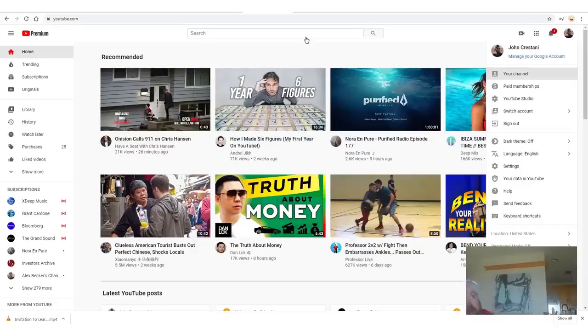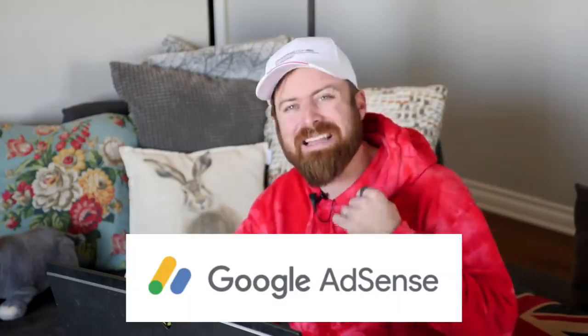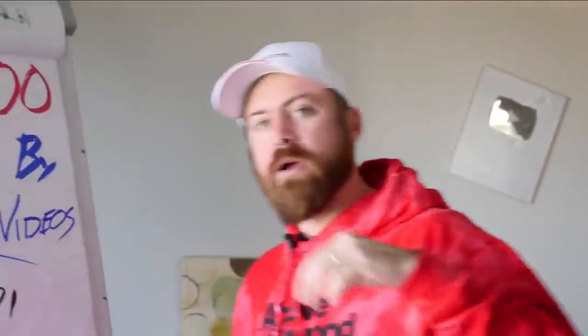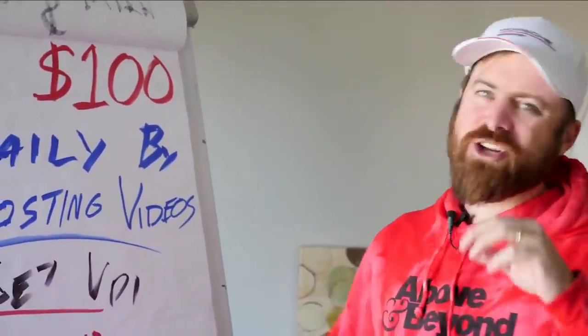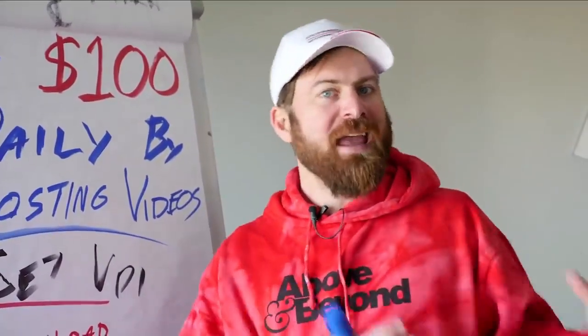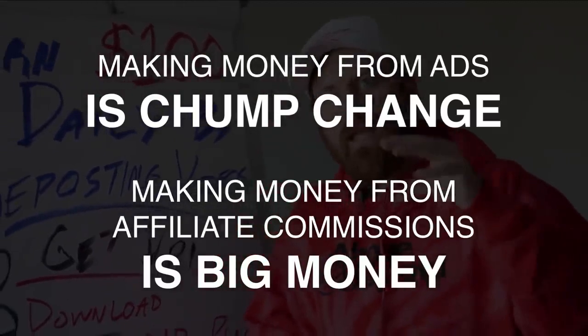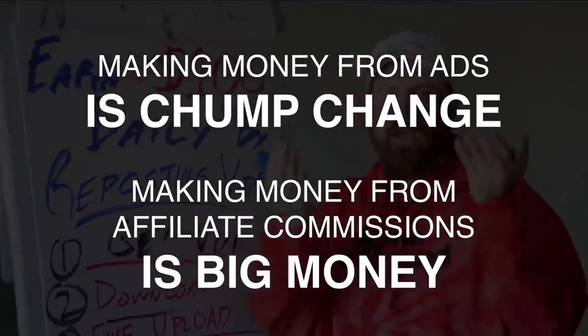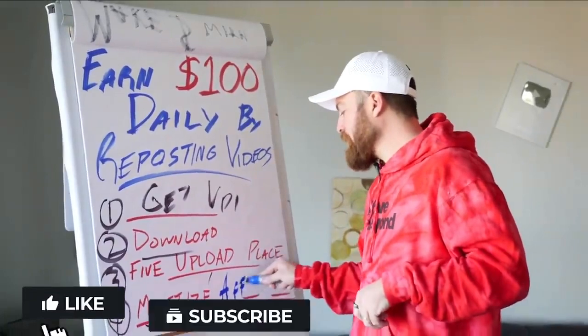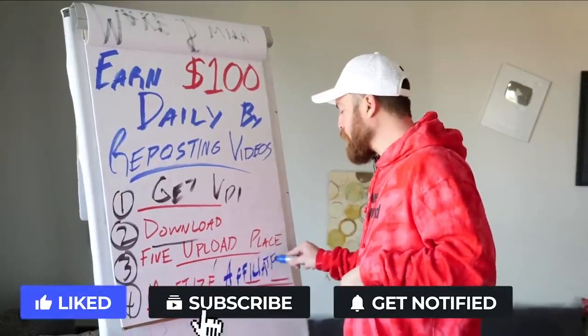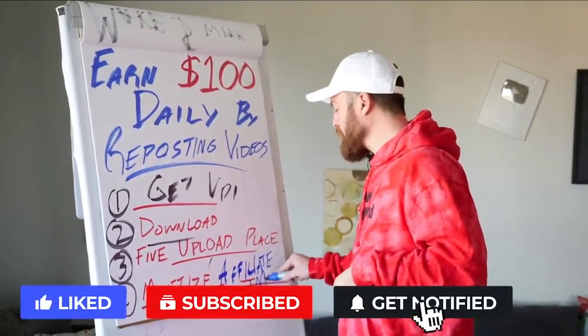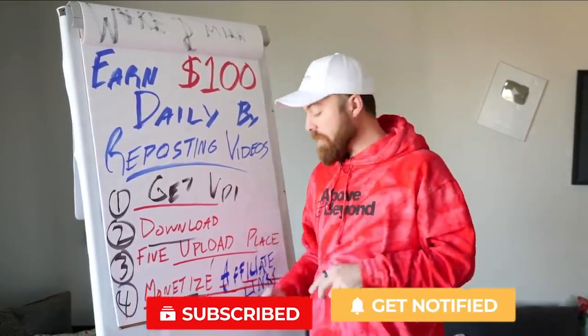Now the thing about YouTube is because I was the first person to upload my own video to YouTube, I end up making the AdSense revenue but you end up making the affiliate commissions — which is what we're going to talk about next. The most important way of monetizing is actually not making money from the ads. Making money from ads is chump change, whereas making money from affiliate commissions is big money. I'm going to show you how you can make money by putting affiliate links underneath or within each of these videos so you can earn recurring revenue.